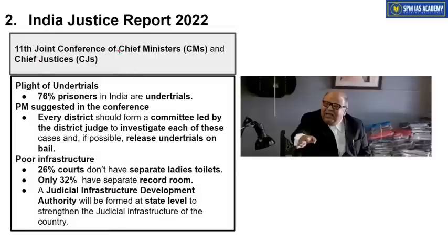From the 11th Joint Conference, another important data point: 76% of prisoners in India are under-trial. To address this, Prime Minister Modi suggested that a committee be formed in every district, led by the district judge, to investigate each under-trial case and release them on bail if possible.